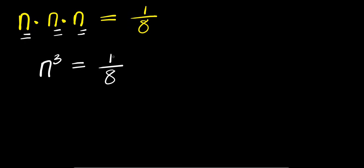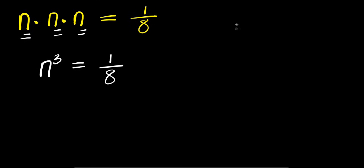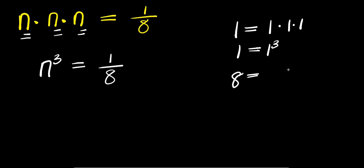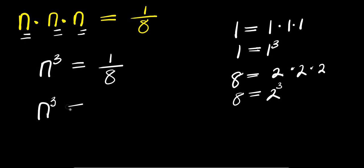Now I need to express this in terms of the same exponent. So 1 is the same as 1 times 1 times 1, that means 1 is the same as writing 1 to the power of 3. 8 on the other hand is the same as writing 2 times 2 times 2, that means 8 is the same as writing 2 to the power of 3. So n cubed equals 1 cubed over 2 cubed.